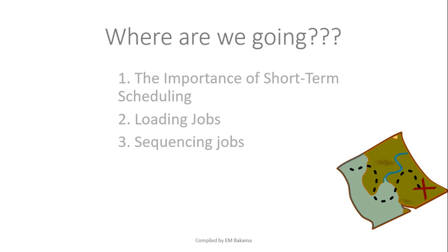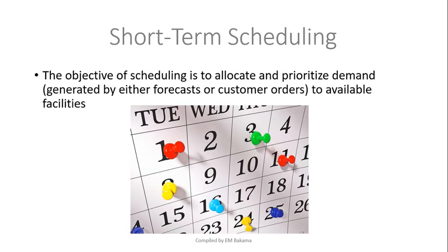This is only the theoretical part because in the next video we'll do some calculations. Now, one thing that we need to know about short-term scheduling is about allocating and prioritizing the demand that has been generated either by the forecast or by the customers. We call it short-term scheduling because most of the time it's allocated on a short-term basis — a maximum of months only. It doesn't go to years. Sometimes it's only days, weeks, or hours.